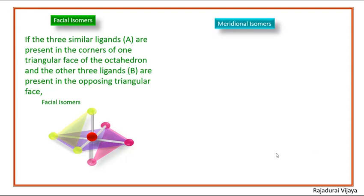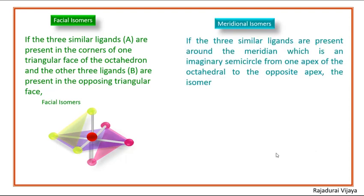Next, the definition of meridional isomer: if the three similar ligands are present around the meridian — which is an imaginary semicircle from one apex of the octahedron to the opposite apex — then the isomer is known as a meridional isomer.